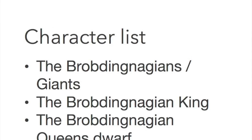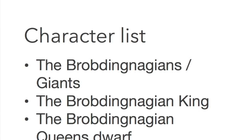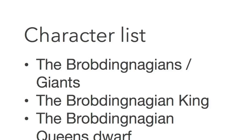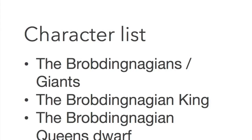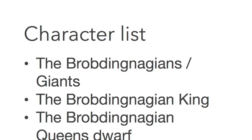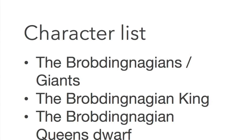Characters: The King of Brobdingnag, who, in contrast to the emperor of Lilliput, seems to be a true intellectual, well-versed in political science, among other disciplines.